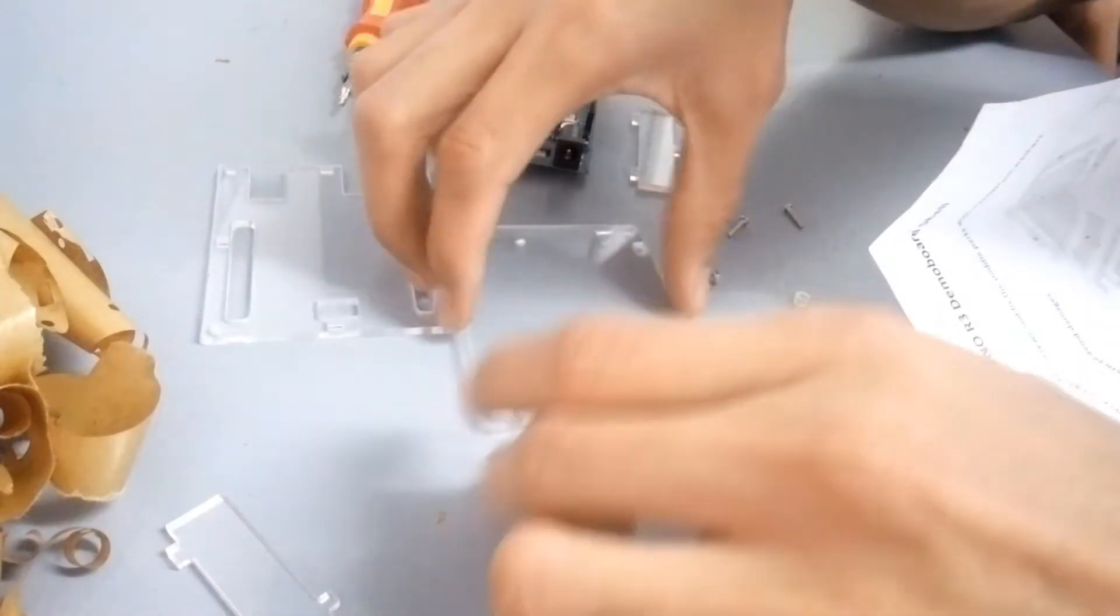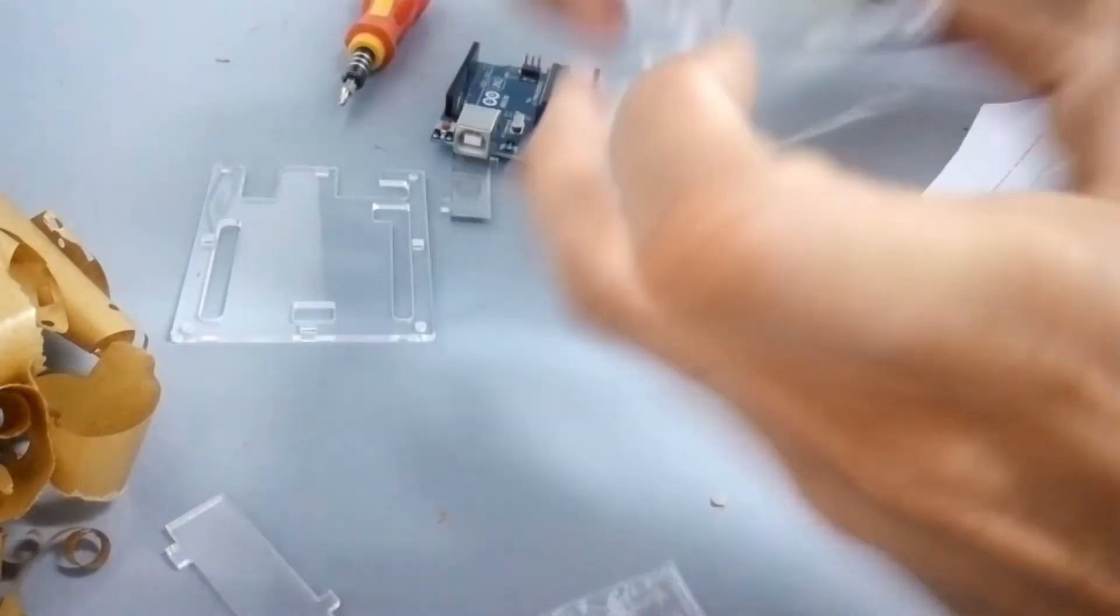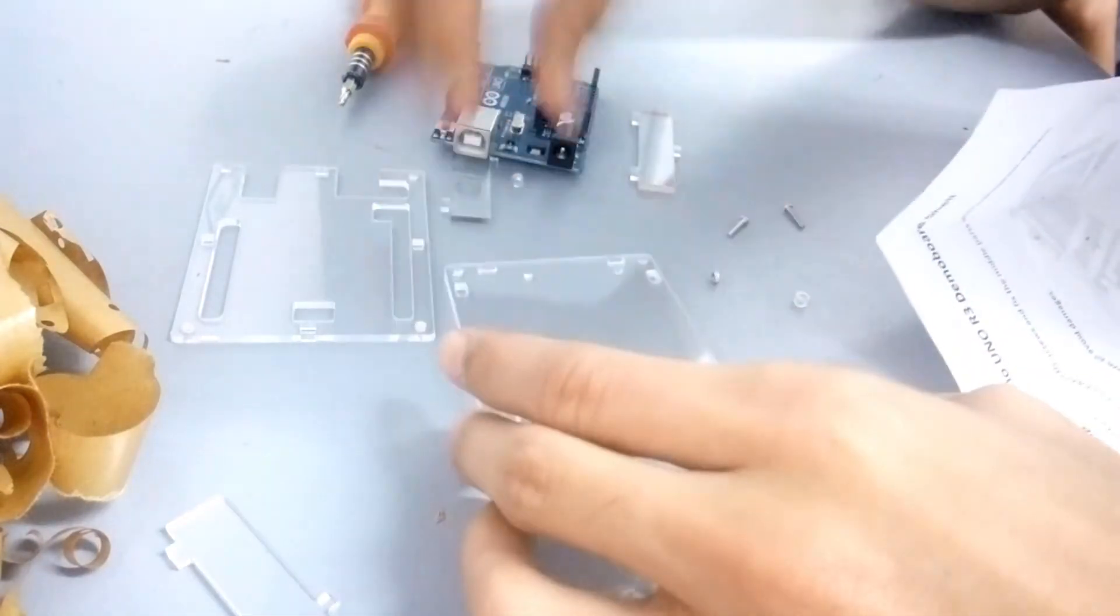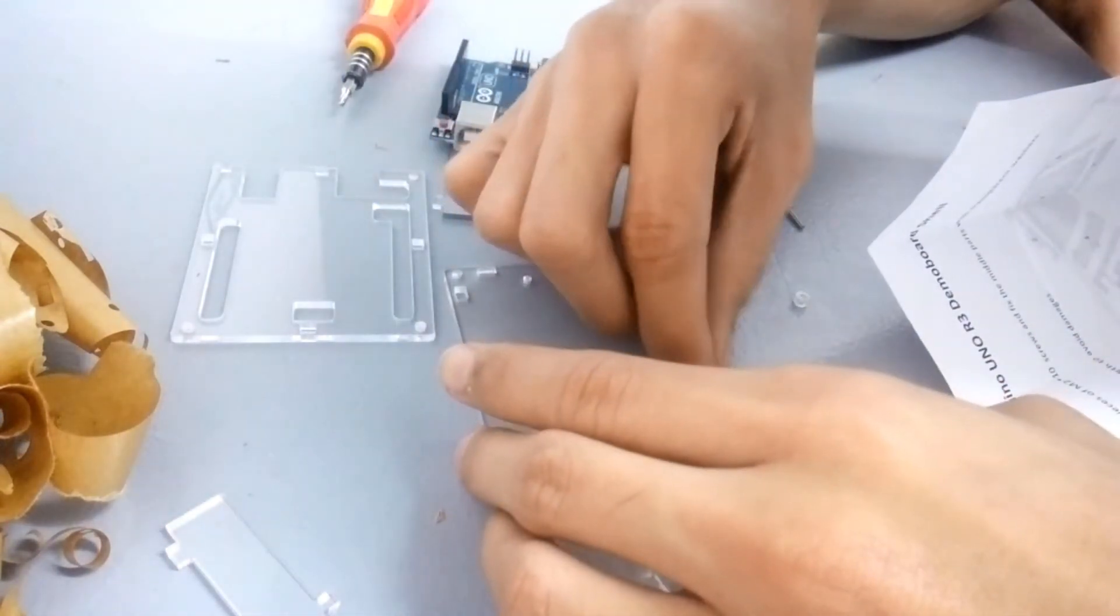The acrylic case has cut-out design that follows the Uno board design. So it was easy to intuitively place the case pieces to the board and fits to the case perfectly.